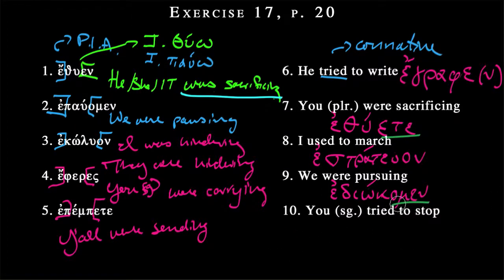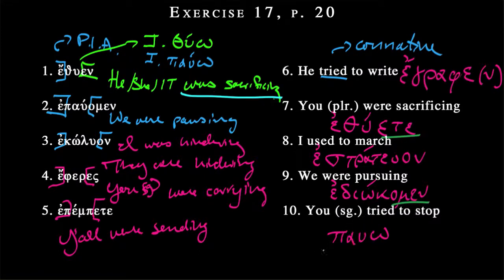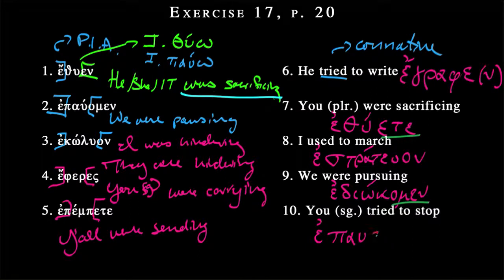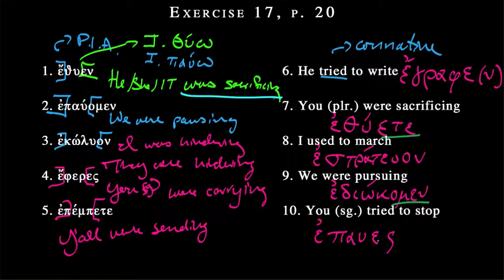'You singular tried to stop.' Stop is PAUO. If we want to make it imperfect, we need the past indicative augment. Drop the personal ending and make it 'you singular' — remember that is epsilon followed by sigma. The result is EPAUES. The last syllable is short, so we want to go back to the antepenult; this is a diphthong, so we hop the accent over to: EPAUES. 'You singular tried to stop.'